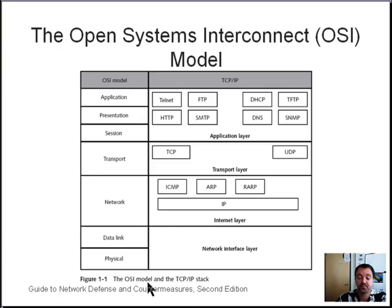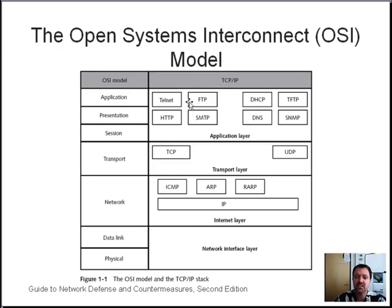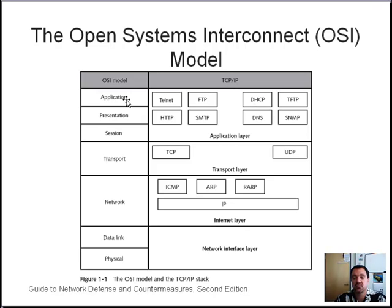Essentially, when an application creates a packet — let's say at the HTTP level — to be sent to another station, the transport layer adds the appropriate information, primarily port information. That is then sent down to the network layer, which adds the appropriate IP information, and then the appropriate MAC address information and other layering information is added. All the information from the application layer is encapsulated in a packet combined from all these other layers.